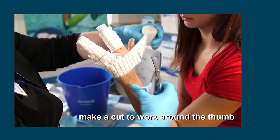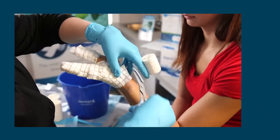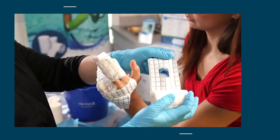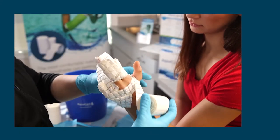Make a cut to work around the thumb and then anchor the material. Begin the short arm cast. You may wish to cut a hole to accommodate the thumb.